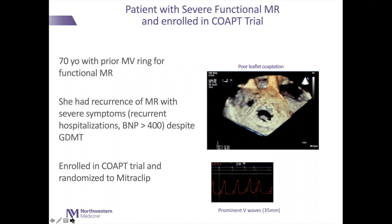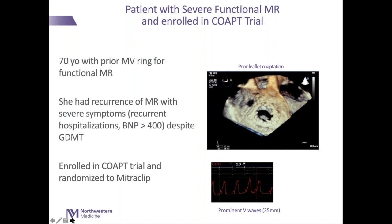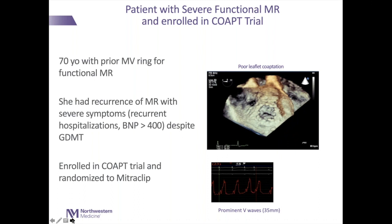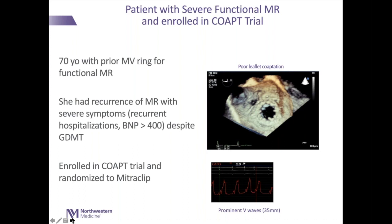Half the patients received the device and half received standard medical therapy; they were followed for a series of months and now up to five years. Here's a patient with severe functional mitral regurgitation who agreed to be in the COAPT trial — a 70-year-old who had a prior mitral valve ring but then developed further mitral regurgitation. As you can see in the echo image, the valve leaflets do not coapt well — that black gap in the middle should not appear — producing a leak in the mitral valve, what we call poor leaflet coaptation.